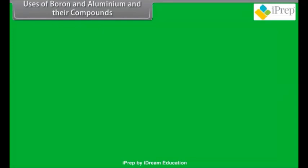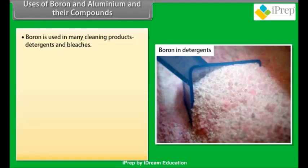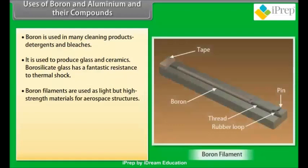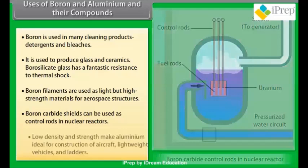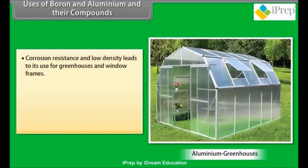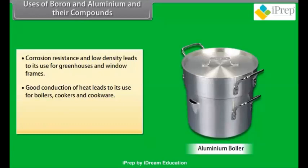Uses of boron and aluminum and their compounds: boron is used in many cleaning products, detergents, and bleaches. It is used to produce glass and ceramics. Borosilicate glass has a fantastic resistance to thermal shock. Boron filaments are used as light but high-strength material for aerospace structures. Boron carbide shields can be used as control rods in nuclear reactors. Low density and strength make aluminum ideal for construction of aircraft, lightweight vehicles, and ladders. Corrosion resistance and low density leads to its use for greenhouses and window frames. Good conduction of heat leads to its use for boilers, cookers, and cookware. Easy shaping makes aluminum a good material for drink cans and roofing materials.